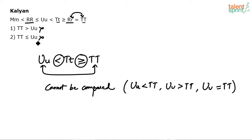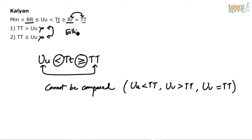The second conclusion — T less than or equal to U — is also wrong, because it cannot be definitely less than or equal; it can be more. However, when I combine the two conclusions, I can say the answer is either this or this, because when you club these two, all three possible relationships are covered: greater is there, less is there, equal to is also there. So the answer should be either one or two is true. Independently they are wrong, but either one or two is definitely true.